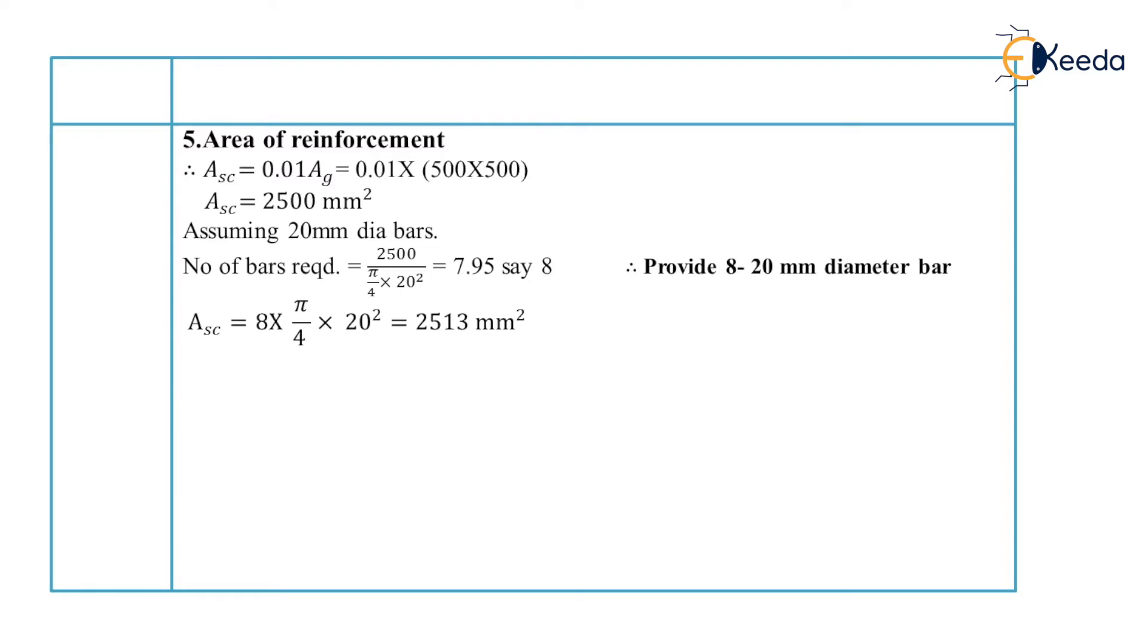Therefore area of reinforcement provided is equal to 8 bars of 20 mm diameter. So 8 into pi by 4 into 20 square which is equal to 2513 mm square. And our last step is design lateral ties.